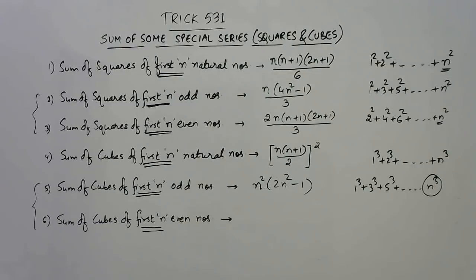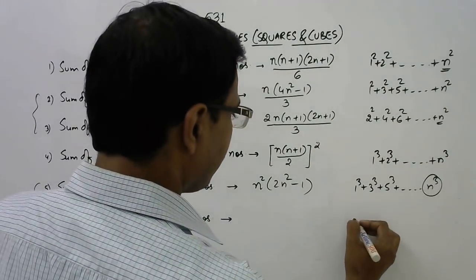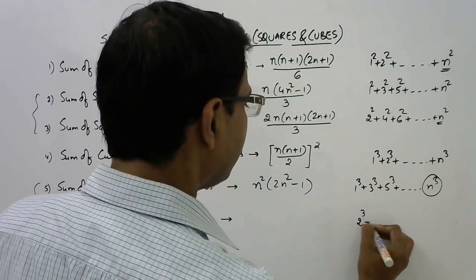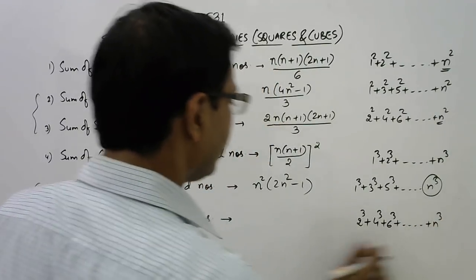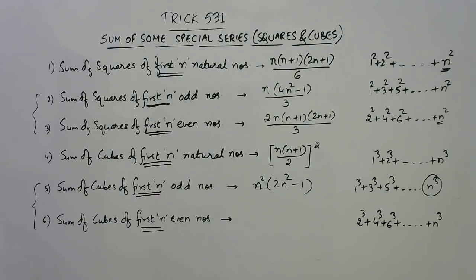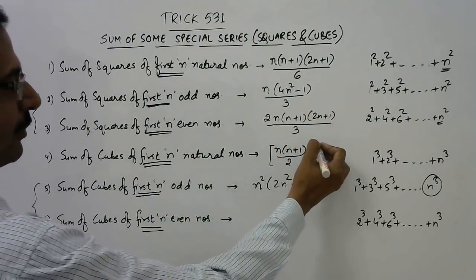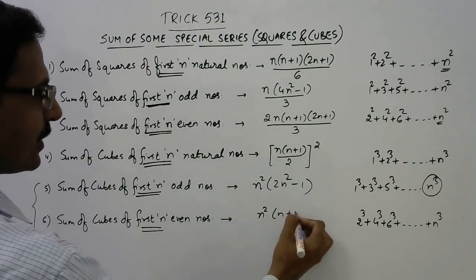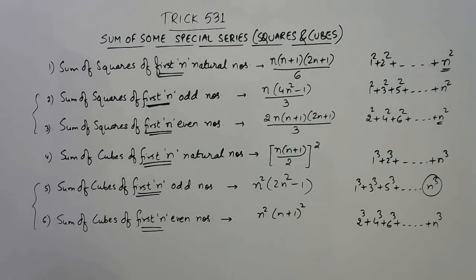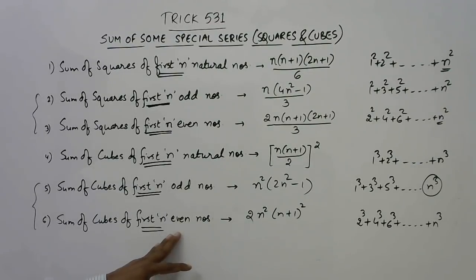For the sum of cubes of first n even natural numbers — 2³ + 4³ + 6³ up to n³ — the formula uses n(n+1) whole squared, but separating the square: 2n²(n+1)². So instead of dividing by 2, we multiply by 2 to find the sum of cubes of first n even natural numbers.